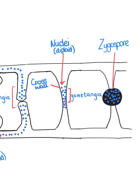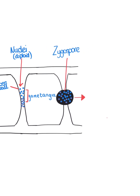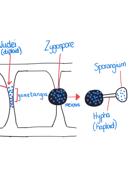When conditions are suitable, the zygospore germinates by meiosis. A haploid hyphae grows out of the zygospore and produces a sporangium at the tip. The sporangium releases many haploid spores which blow away to produce new hyphae and mycelia.